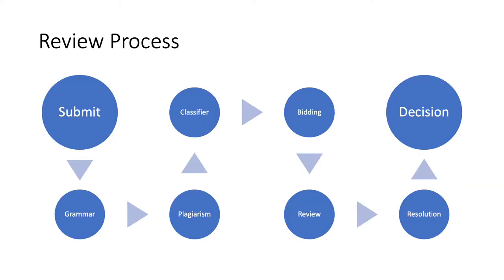Next, the paper goes through automated plagiarism detection and a classifier that identifies the research methods used. The paper, plagiarism report, and classification results go to one of several managing editors. The ME checks that the paper is within the venue's scope, checks the plagiarism report, and verifies that the method selected by the author matches the method chosen by the classifier. Next, the paper goes to paper bidding, and a preprint is automatically deposited on Archive. Every second month, the paper board bids for papers, like in many conferences today. The system assigns two reviewers, one reconciler, and one judge — I'll define these in a minute.